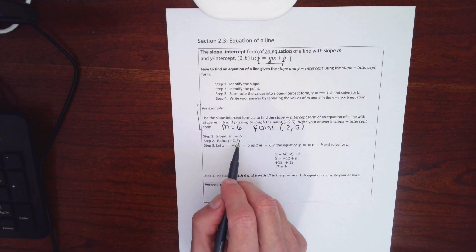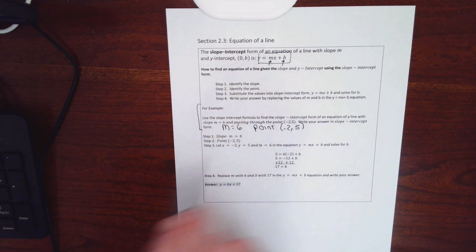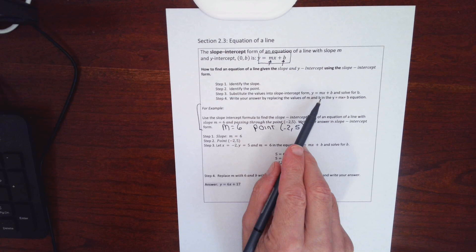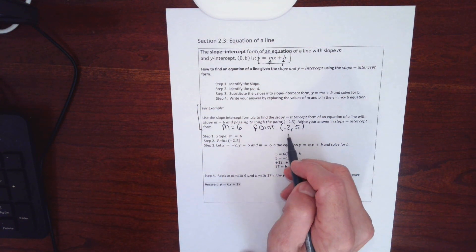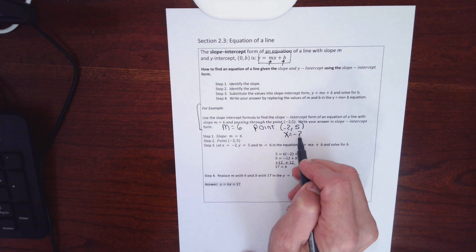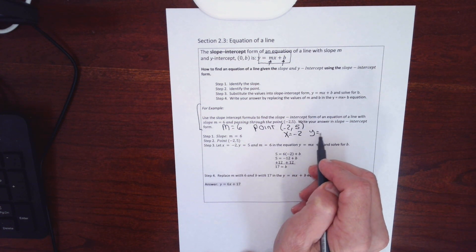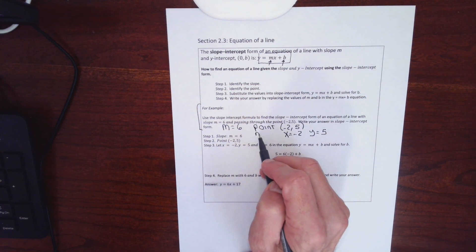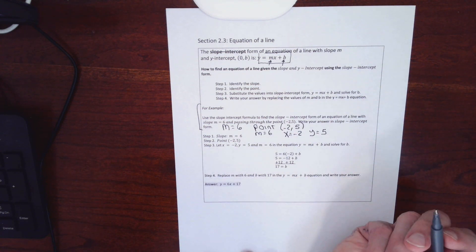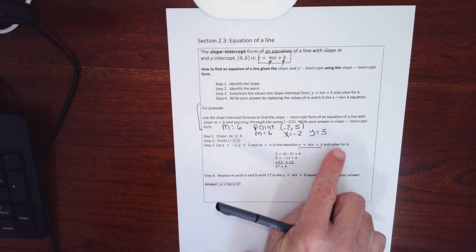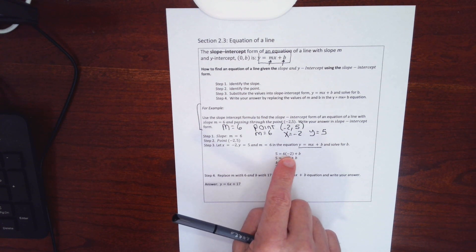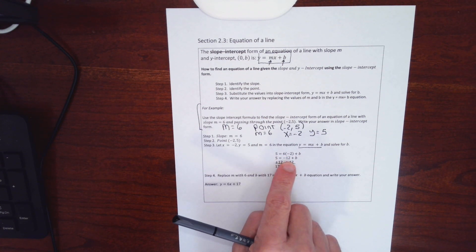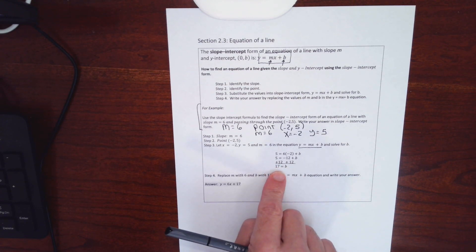Second, I identify the point. Third, the algebra: I take the numbers given and plug them into y equals mx plus b. Specifically, x equals negative 2 (the x-coordinate), y equals 5 (the y-coordinate), and m equals 6 (the slope), then solve for b. I get 5 equals negative 12 plus b, add 12 to both sides, and get b equals 17.